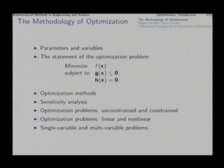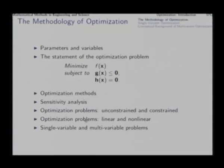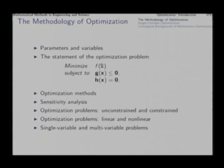Optimization problems can be unconstrained — where the entire space of x is feasible — or constrained. We classify optimization methods accordingly into unconstrained and constrained optimization. We also classify problems as linear and non-linear: if both the objective function and constraint functions g(x) and h(x) are all linear, it is a linear programming (LP) problem. If either the objective or any constraint function is non-linear, it is a non-linear programming (NLP) problem.